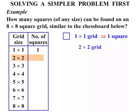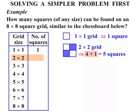A two by two grid. Let's consider that. So how many squares? Well we have one, two, three, four. We have four small squares. But then we have one bigger square. And four plus one is five. So we have five squares on a two by two grid. Let's write that in our table there.